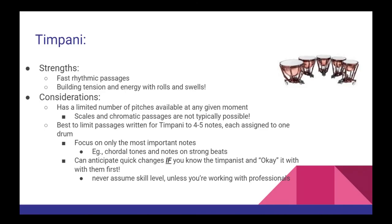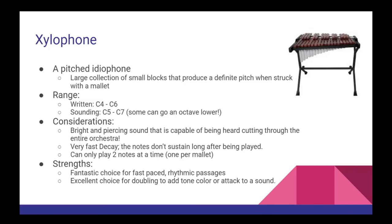Next, let's look at the xylophone. The xylophone is a pitched idiophone. It has a written range of C4 to C6, and a sounding range that is an octave higher. It has a very bright and piercing sound, more than capable of cutting through the entire orchestra, and the sound has a very fast decay, meaning it doesn't sustain for very long. This instrument is a fantastic choice for playing both fast, rhythmic passages and melodic material, and very often it's used to double with other instruments to create a new tone color.